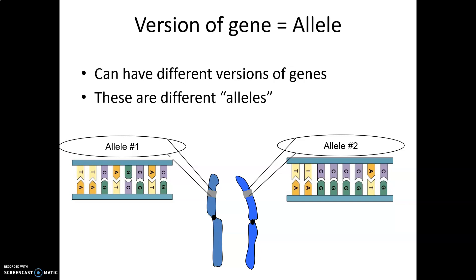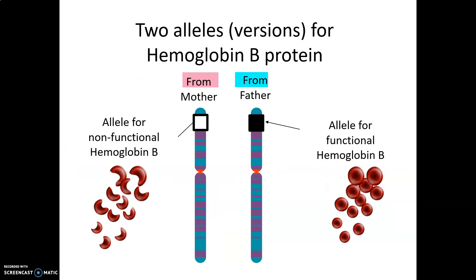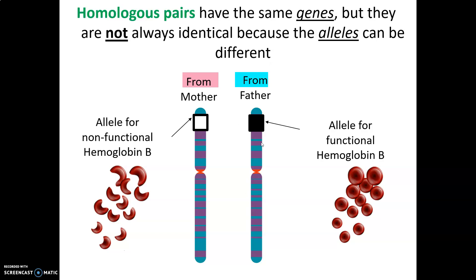It's kind of like having two different recipes for snickerdoodle cookies. Both recipes are for snickerdoodles, but one version calls for white flour and the other calls for whole wheat flour. In this example, we're looking at the gene for hemoglobin B, the protein that allows red blood cells to transport oxygen. Everybody has two copies of the hemoglobin B gene — one from their mother and one from their father — but the alleles might be different. So each homologous chromosome in a pair will be matching because each one has the same genes, but they're not identical because the alleles can be different.